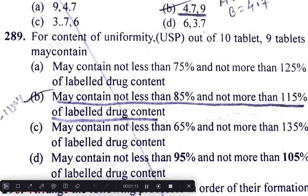For content uniformity, out of 10 tablets, 9 tablets may contain not less than 85% and not more than 115% of the labelled drug content.